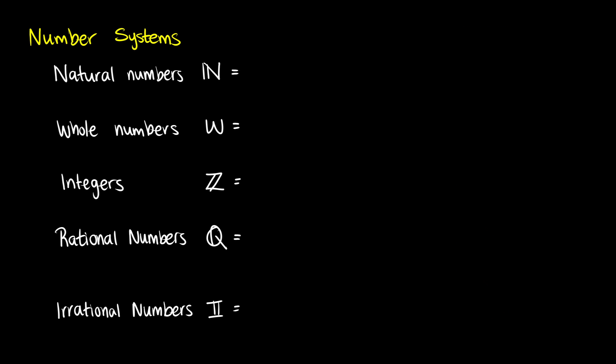The first set, which is the smallest set, is called the set of natural numbers. The set of natural numbers includes the countable whole numbers from 1, 2, 3, 4, 5, all the way up continuing on infinitely. So this is starting from 1.